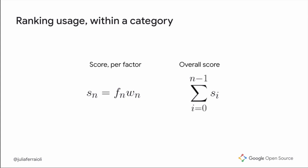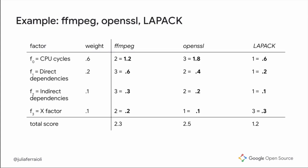I'm going to make this more concrete with an entirely contrived example — I picked these three libraries out of a hat and all the numbers are completely made up. It's like 'Whose Line Is It Anyway?' — the game is made up and the points don't matter. I've got four factors: CPU cycles, direct dependencies, indirect dependencies, and a wild card factor. I'm going to rank FFmpeg, OpenSSL, and LAPACK.